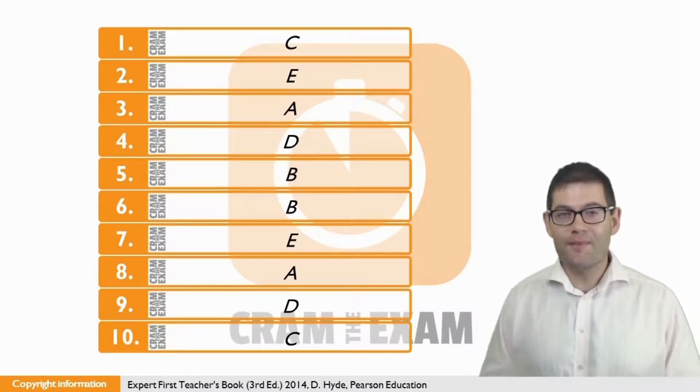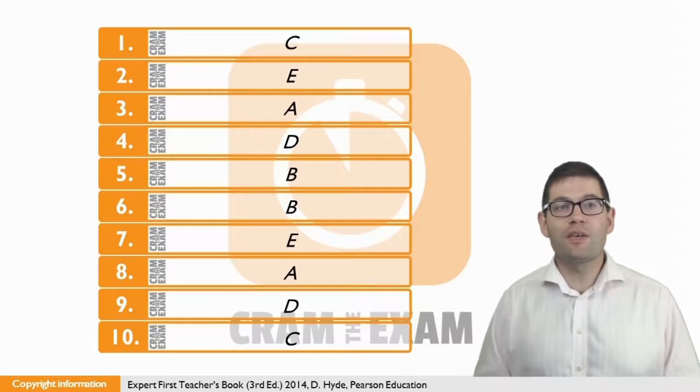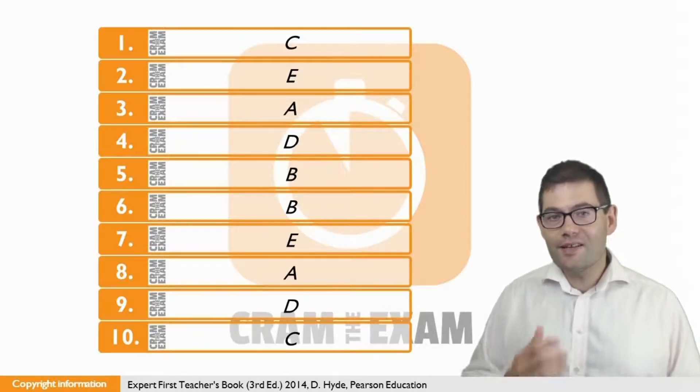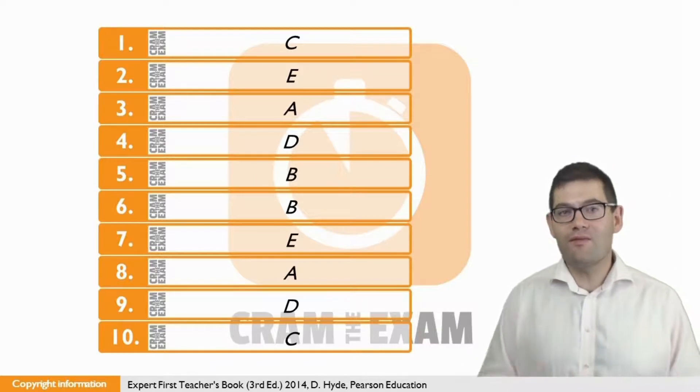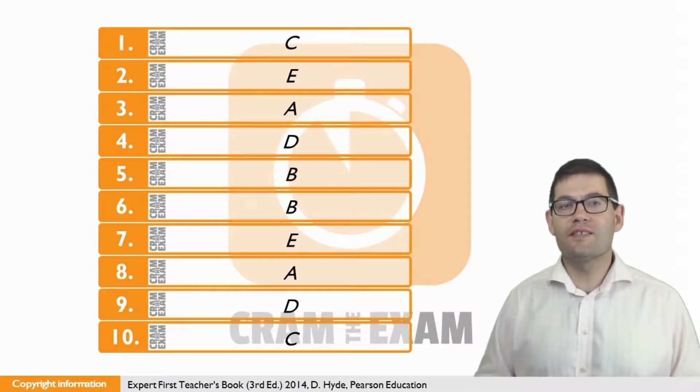For question six, the answer is B. Yvette has mixed feelings about giving to street collectors, as the idea of mixed feelings in the question text can be seen in B, when Yvette says, 'Asking whether or not I should give money to a street collector.' Then she goes on to justify these mixed feelings through various arguments.